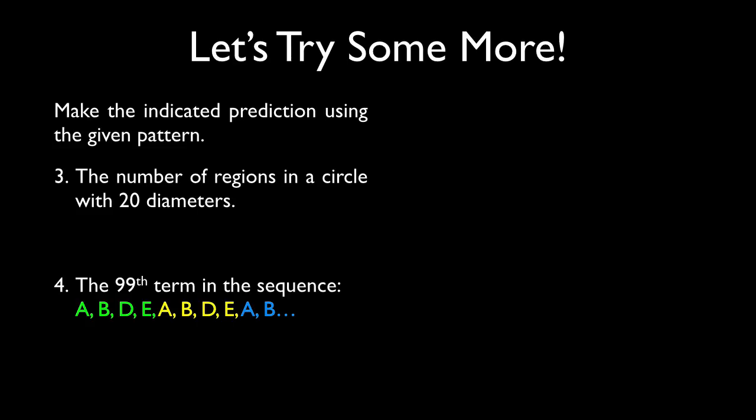Here's another way that inductive reasoning can be helpful. Notice that there's not a pattern here with number 3. The question is asking, how many regions are in a circle with 20 diameters? We could always draw a circle with 20 diameters, but that could get cumbersome. Or we could look at a pattern. Here's a circle. I'll draw in 1 diameter.